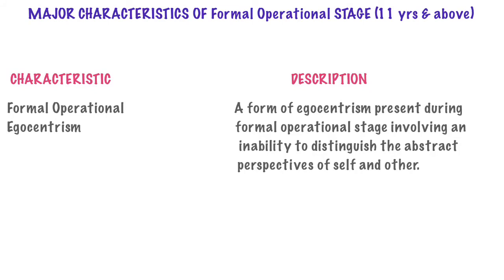Formal operational egocentrism refers to a form of egocentrism present during the formal operational stage, which involves an inability to distinguish the abstract perspectives of self and other. We learned in sensorimotor development that a child is egocentric and not able to separate himself or herself from the surroundings. Here, in the formal operational stage, adolescents are not able to separate their own perspective from others' perspectives.